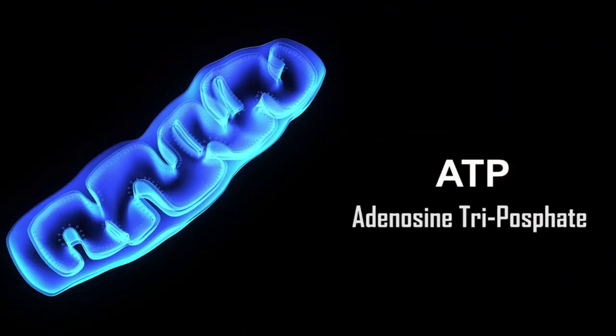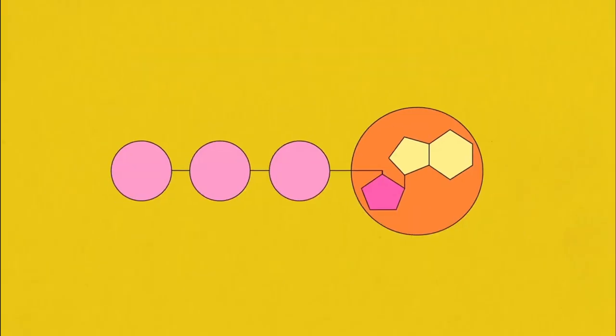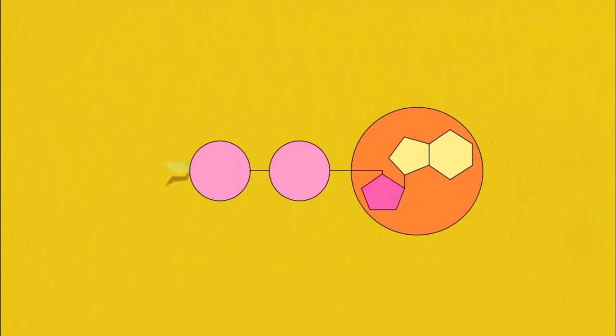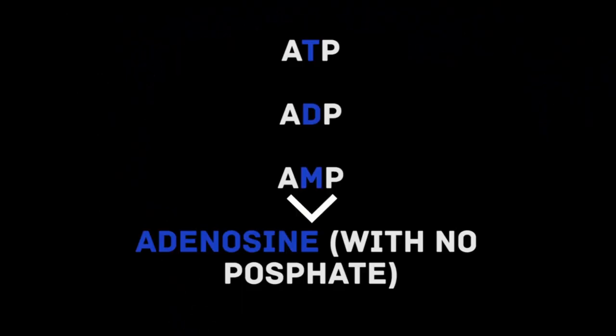The mitochondria converts glucose into ATP molecules. ATP is adenosine triphosphate — it has 3 phosphate groups. This molecule will break down: there is a phosphate breakdown, and we use that energy for our daily activity. If we continue to do this, we can add adenosine. That is the main reason for adenosine.